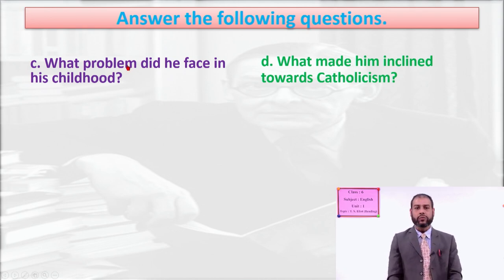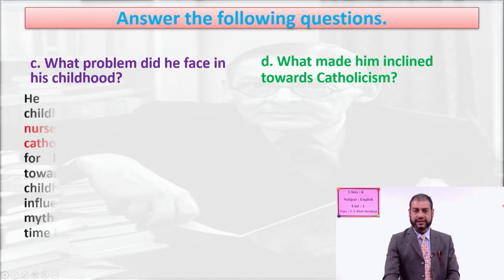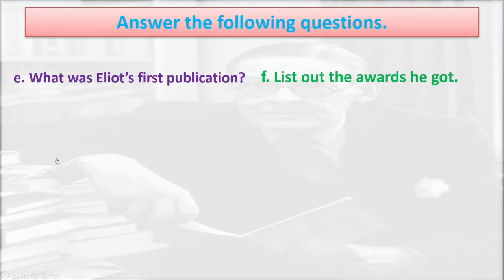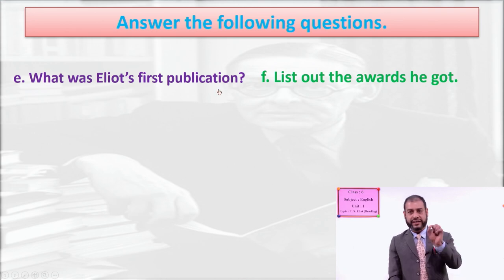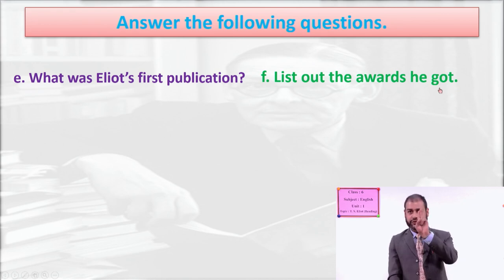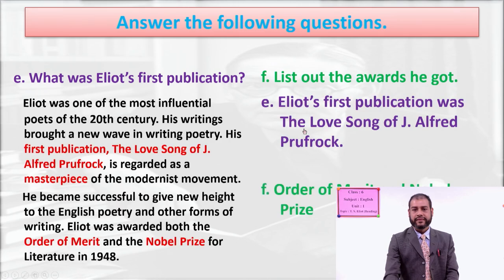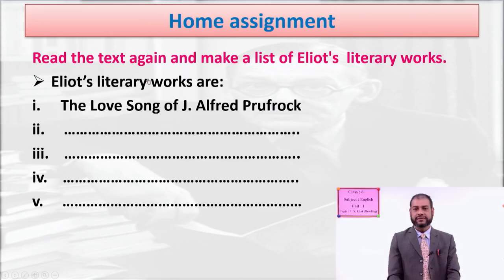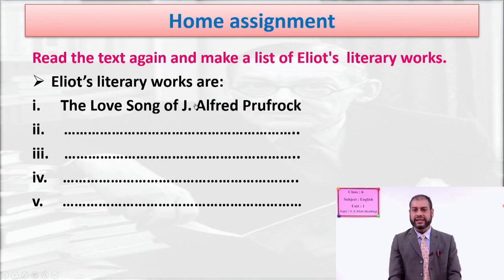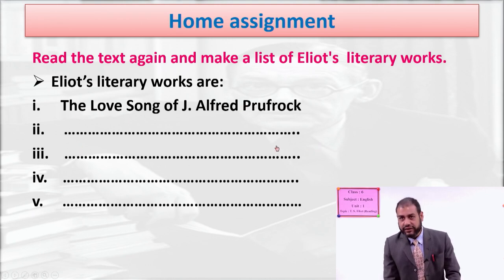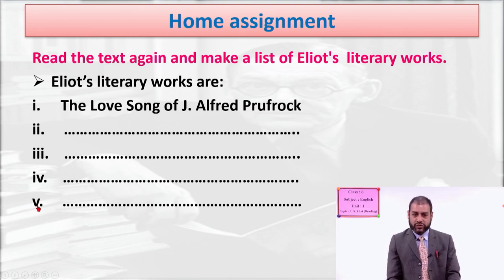You can do the rest of the questions in your textbook or notebook: What problem did he face in his childhood? What made him inclined towards Catholicism? What was Eliot's first publication — write the name of the poem. List out the awards he got — he received two awards, write their names. Then read the text again and make a list of Eliot's literary works — write the names of poems and plays. This is your homework.